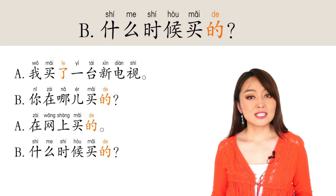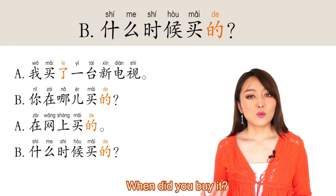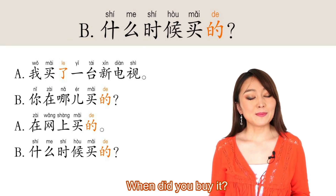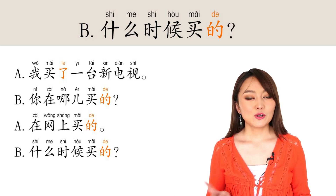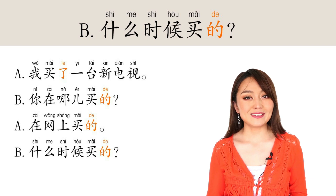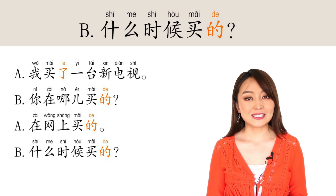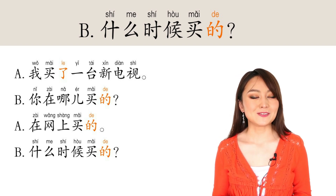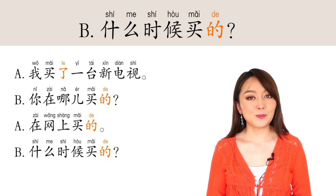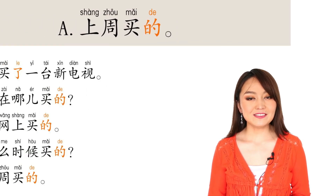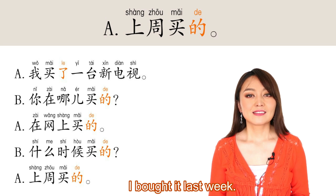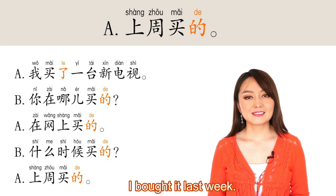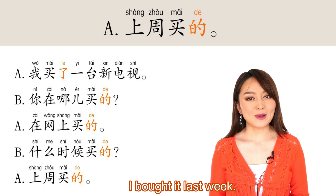And B keeps asking: 什么时候买的? — When did you buy it? Remember, 得 is used to ask who, when, where, how. So in this question it's when — we use 得. And A answers: 上周买的 — I bought it last week. Still 得.